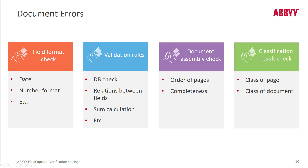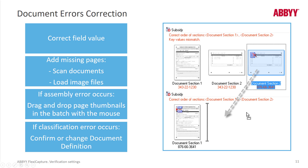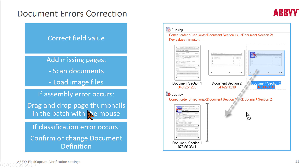We've got a number of errors to handle: field errors, validation rule errors such as sum calculations, database lookup errors, document assembly errors, page order errors or missing pages, and classification errors. In the case pictured here, if there are images in the wrong order — for example, a page two of one document appearing after page two of another — you just need to drag it down and the rule violations will go away. It's often the case that you want to go into thumbnail mode to do some of these quality checks and error corrections.